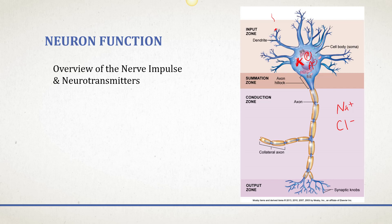As soon as a neurotransmitter binds, it opens a channel and sodium starts flooding into the inside of the neuron. Sodium moves in like waves — the more neurotransmitters that bind, the more sodium floods into the neuron, accumulating a charge. Once that charge accumulates and reaches a threshold at the axon hillock — also known as the summation zone — it's going to trigger voltage-gated sodium channels to open, and then we have an all-or-nothing response all the way to the end.